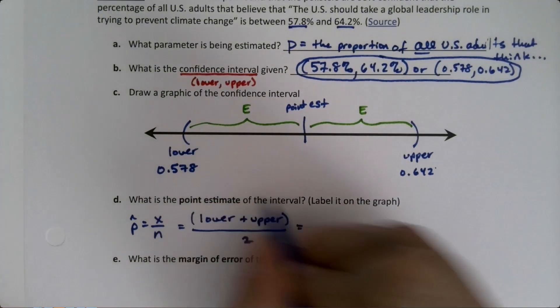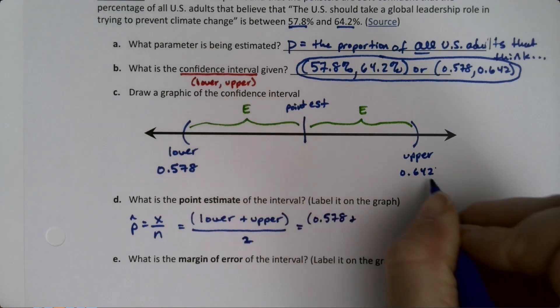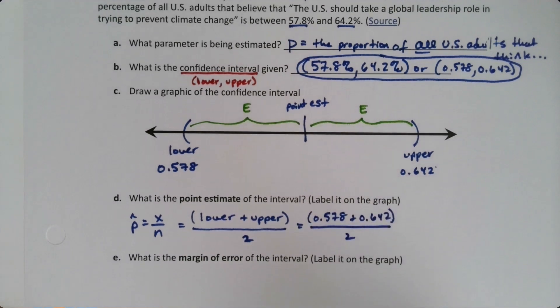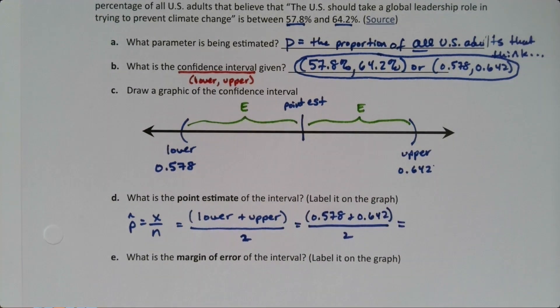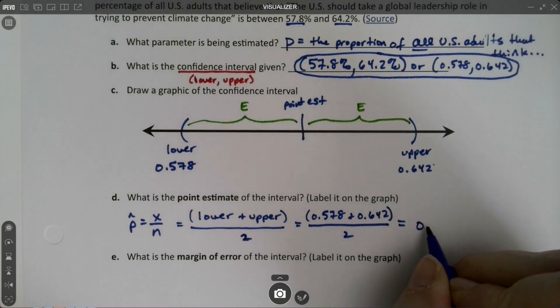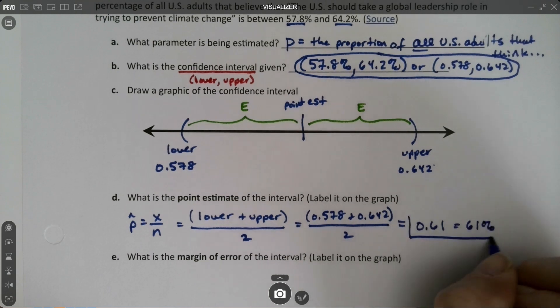All right, now what would that be? That would be 0.578 plus 0.642, add them up and divide by 2. Well I'm gonna grab decimals to do that. So let me get rid of these. Now you want to make sure you put them in parentheses first because that way it will do the calculation correctly, because you need to add them up and then divide by 2. And we get 0.61 or 61%, either one, they're both correct. That's the point estimate right there in the center.